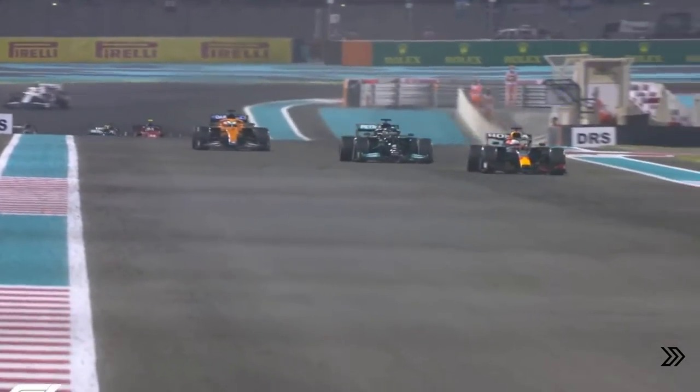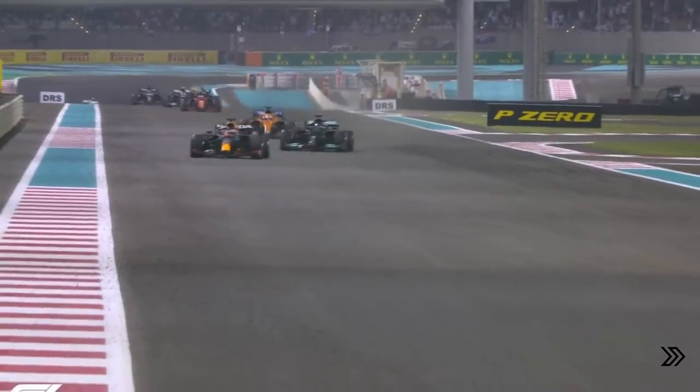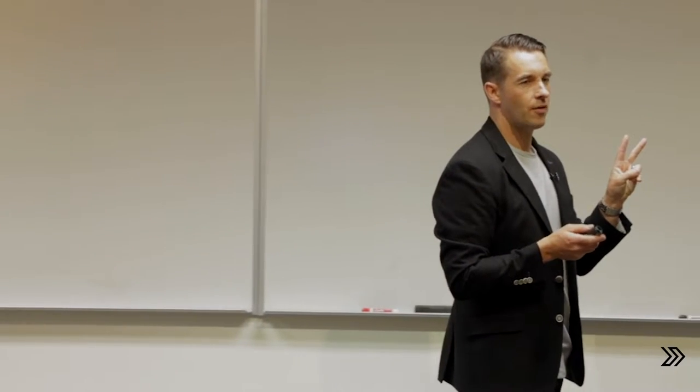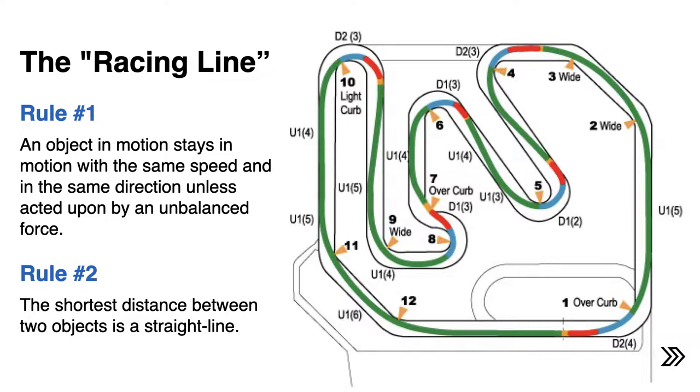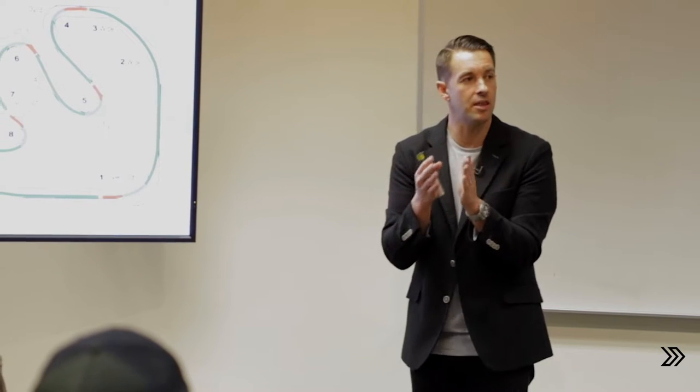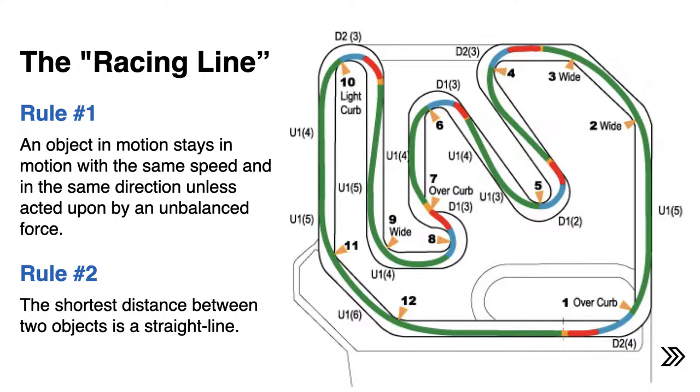But there's two laws that you need to know about racing, two rules. Every racetrack has a racing line, which means the track itself is not the line, because what we know is that an object in motion tends to stay in motion until an unbalanced force stops it. Number two: the shortest distance between two points is a straight line. So every track has a line, every car has a line, every condition creates the perfect line, and that perfect line is the straightest path through this course.